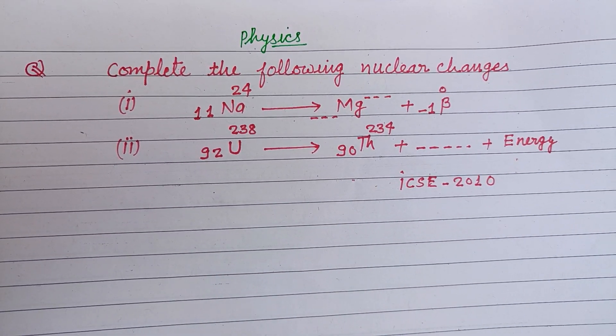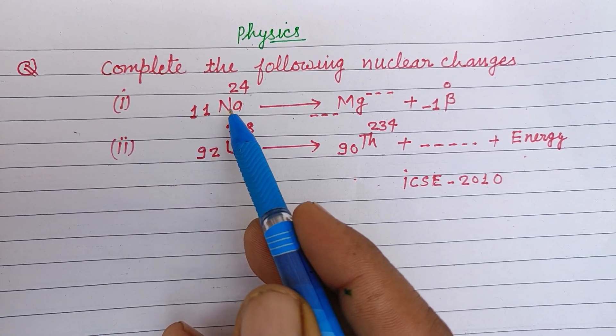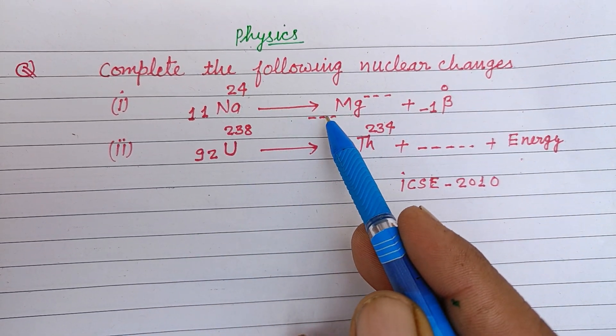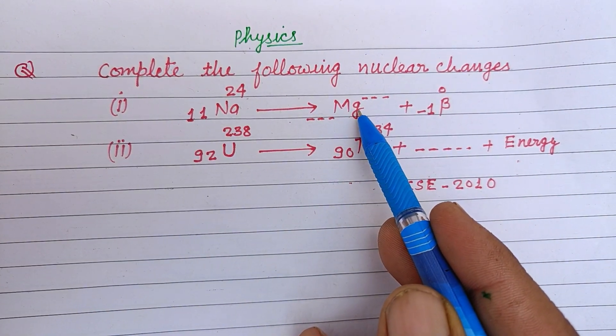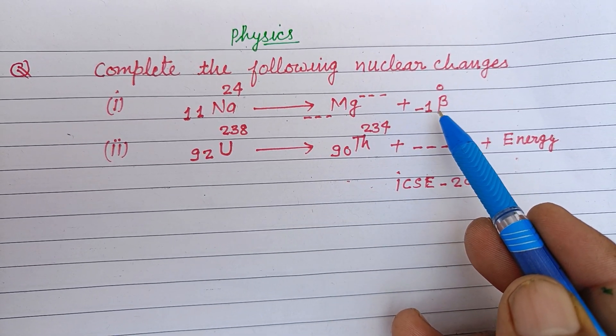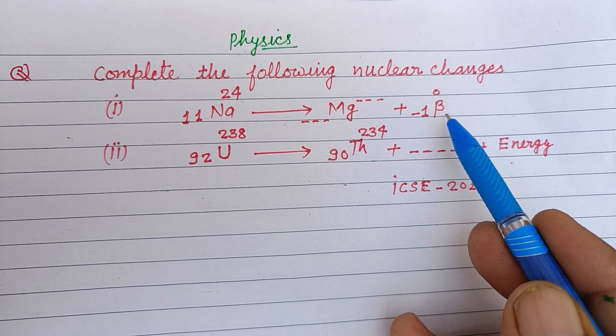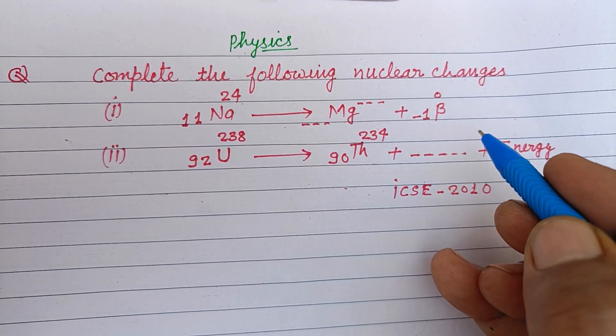Based on nuclear reactions, complete the following nuclear changes. First is 11 Na 24, which gives rise to Mg. A beta particle, which is also known as an electron, is emitted here.